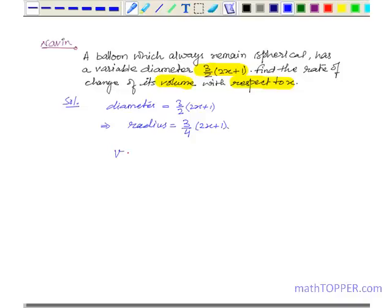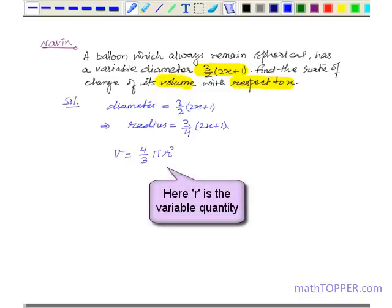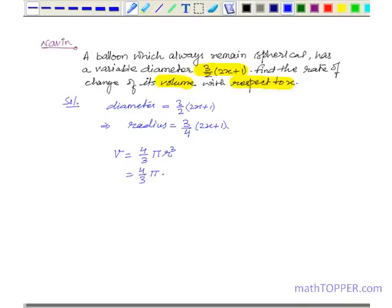The formula for volume of a sphere is 4/3 π r³, which becomes 4/3 π times the cube of the radius, that is 27/64 into (2x + 1)³.